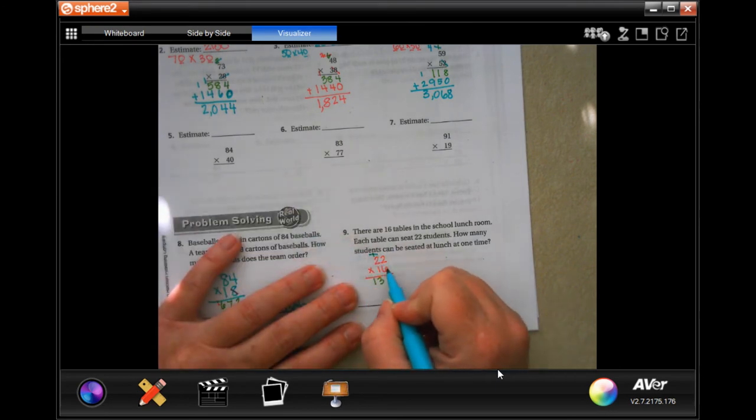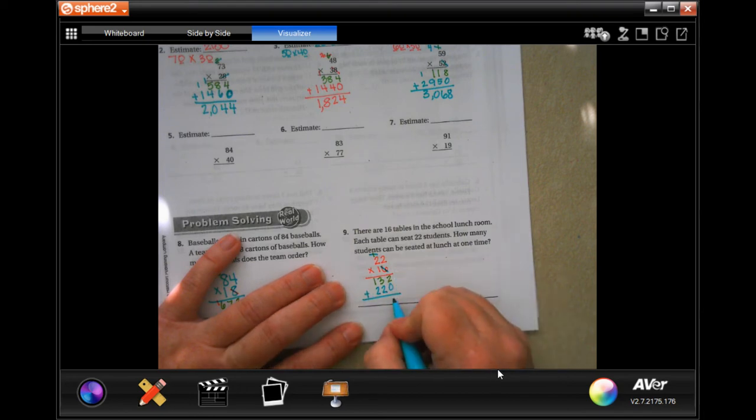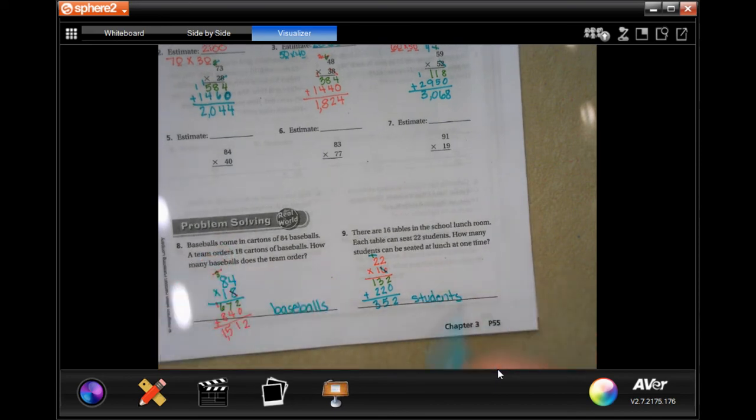Now tic-tac-toe, and then 1 times 22 is 22. Add them up. 2, 5, 3. So 352 students can be seated at one time at lunch. 352 students.